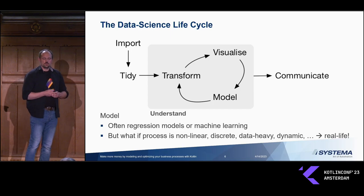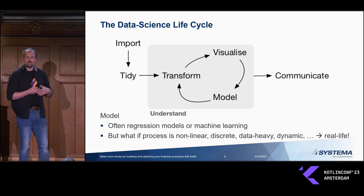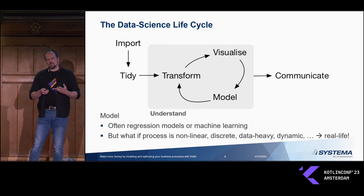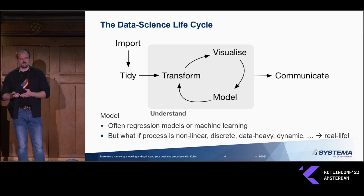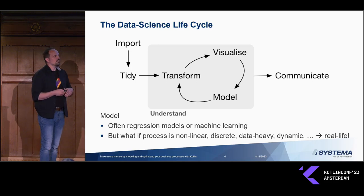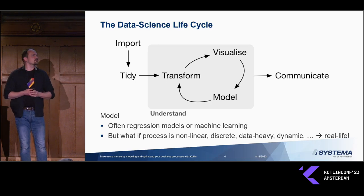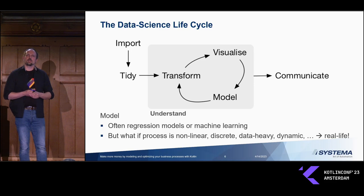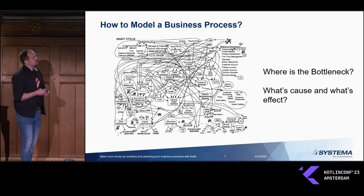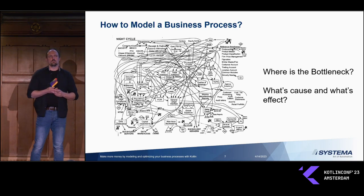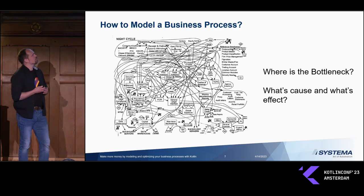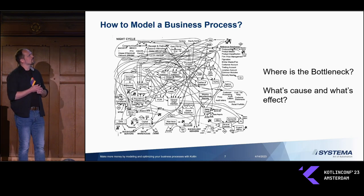This is similar to what some of you do when dealing with data in general, because the data science lifecycle looks pretty much the same: we take data from a real-world process, clean it up, transform it, explore it visually, and build models. In data science these are often regression or machine learning models. But in real-world businesses, processes are often non-linear, discrete in nature, heavy with respect to data, and highly dynamic. Regression or machine learning models sometimes are not really compatible with these types of complexities and challenges.